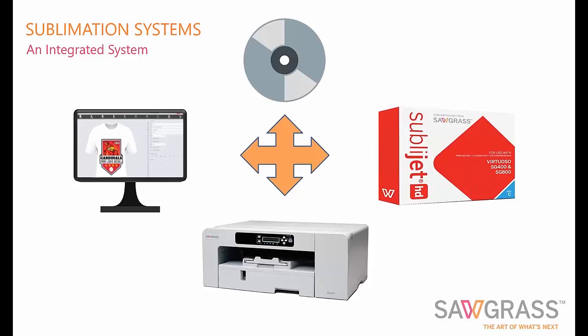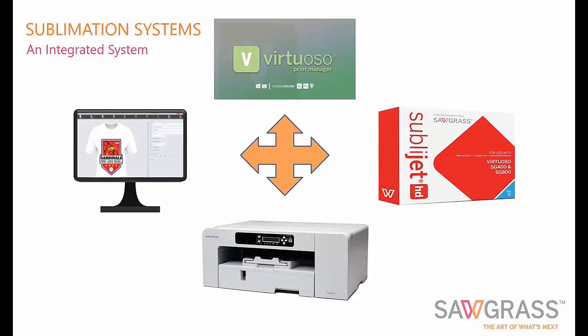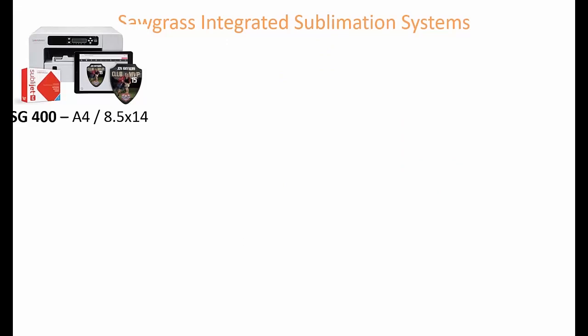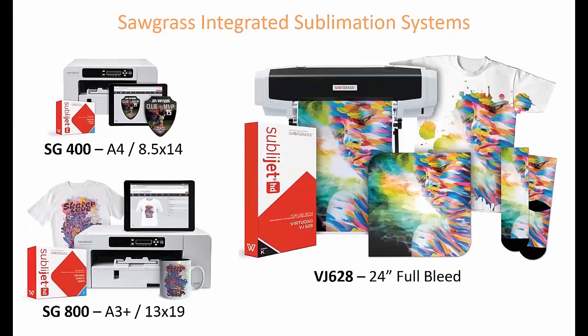In the adaptive system, the ink was designed to work in the printer, but the printer doesn't really know who the ink is — it's like a stranger that came to town. The final part we're focusing on today is the Virtuoso Print Manager. When all these things communicate together, you get a better image, better quality, and more consistency. Every one of our systems is an integrated system, meaning it comes with the printer, the ink, the Virtuoso Print Manager, and the Creative Studio.